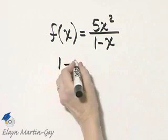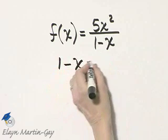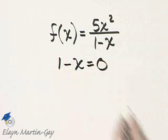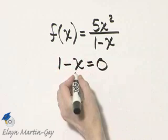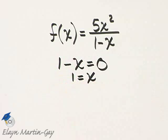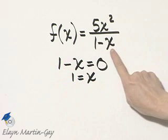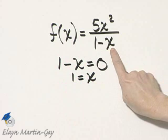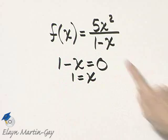If you need to, go off to the side and set it equal to zero. I can add x to both sides, and then I'll have that x is equal to one. Notice that if x is one, the denominator is zero.